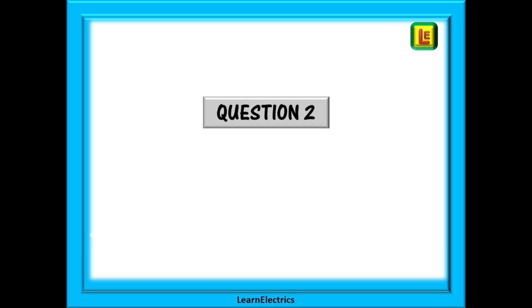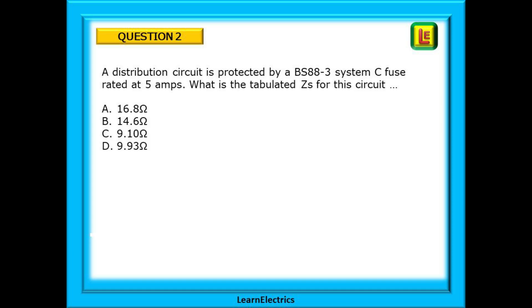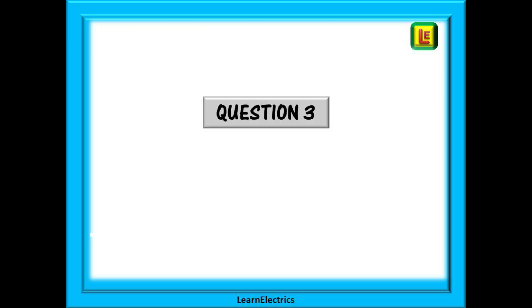On to question 2. A distribution circuit is protected by a BS88-3 system C fuse rated at 5 amps. What is the tabulated ZS for this circuit? Again, pause the video whilst you find the answer. You should have answer B, 14.6 ohms. As before, the information in the box shows you the route to the answer.